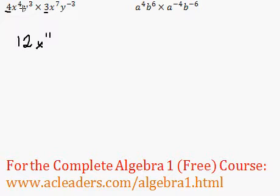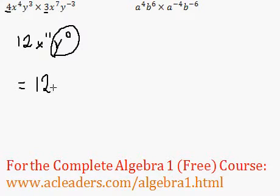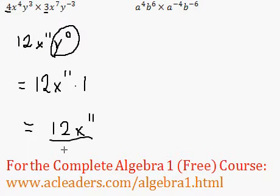And we have y to the 3 times y to the negative 3. 3 plus negative 3 is equivalent to 3 minus 3, which is just 0. And what is y to the 0 equivalent to? Anything to the 0 is equivalent to 1. So 12x to the 11 times 1 is just going to be equivalent to 12x to the power of 11.